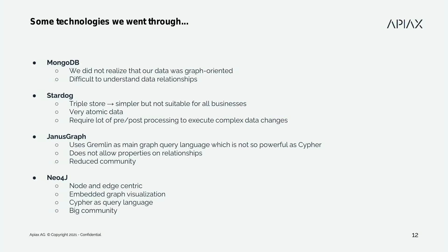Then we tried Stardog, which is not a full graph database — it's more a triple store, which is simpler but not suitable for all businesses. The data is very atomic, based on objects, subjects, and predicates which build the nodes and edges. But this required a lot of pre and post processing on our services in order to execute complex changes. That's why we discarded this option.